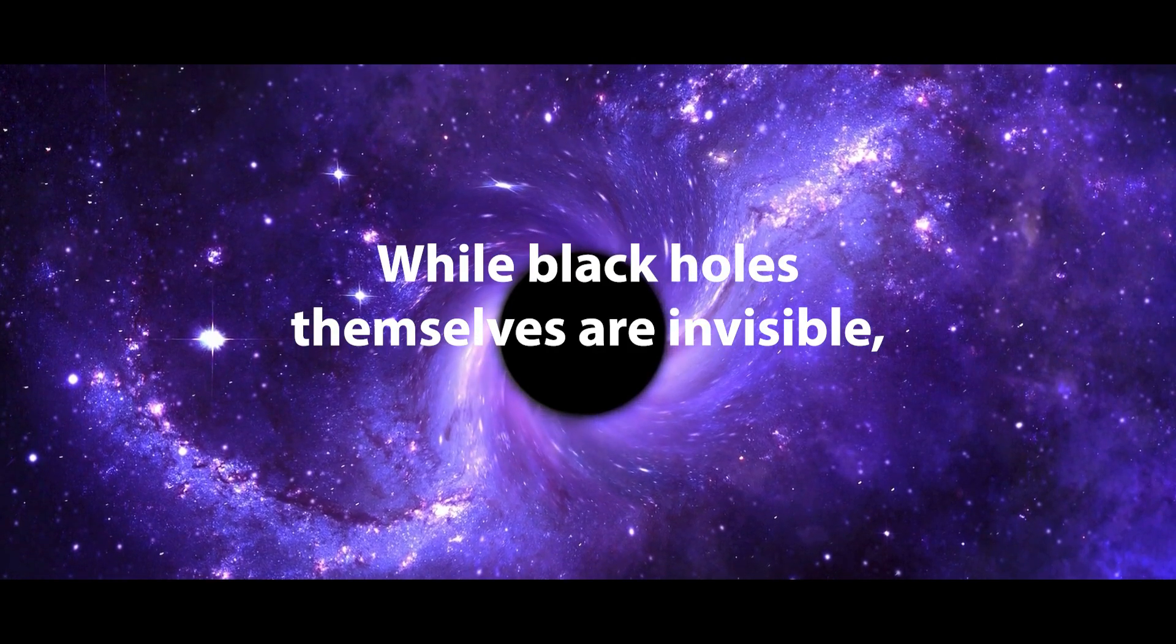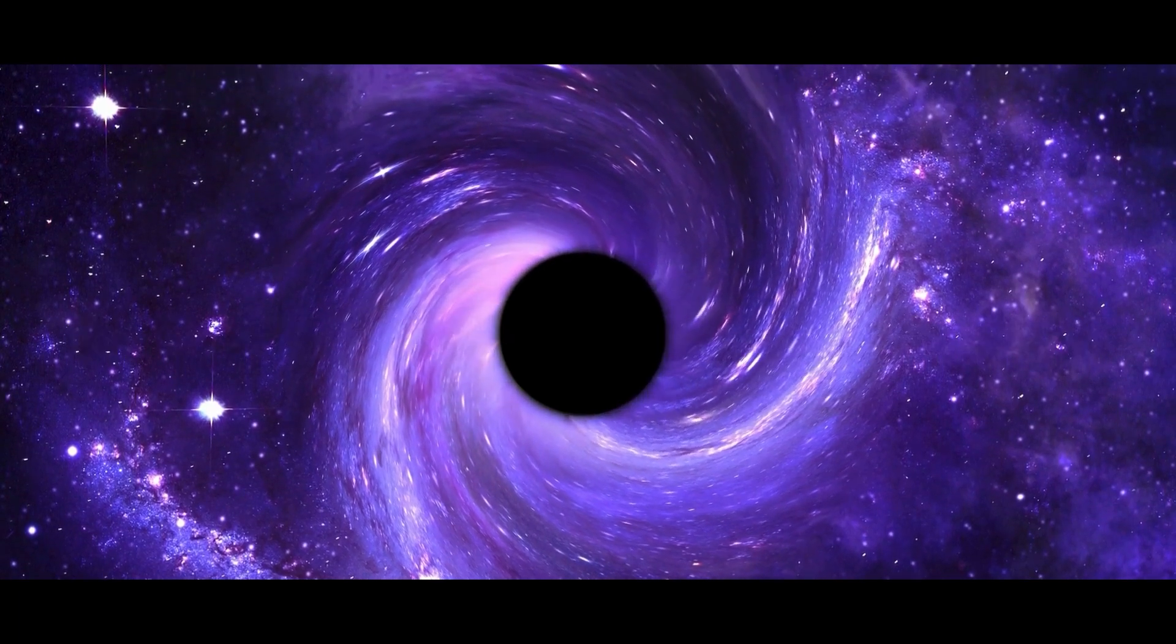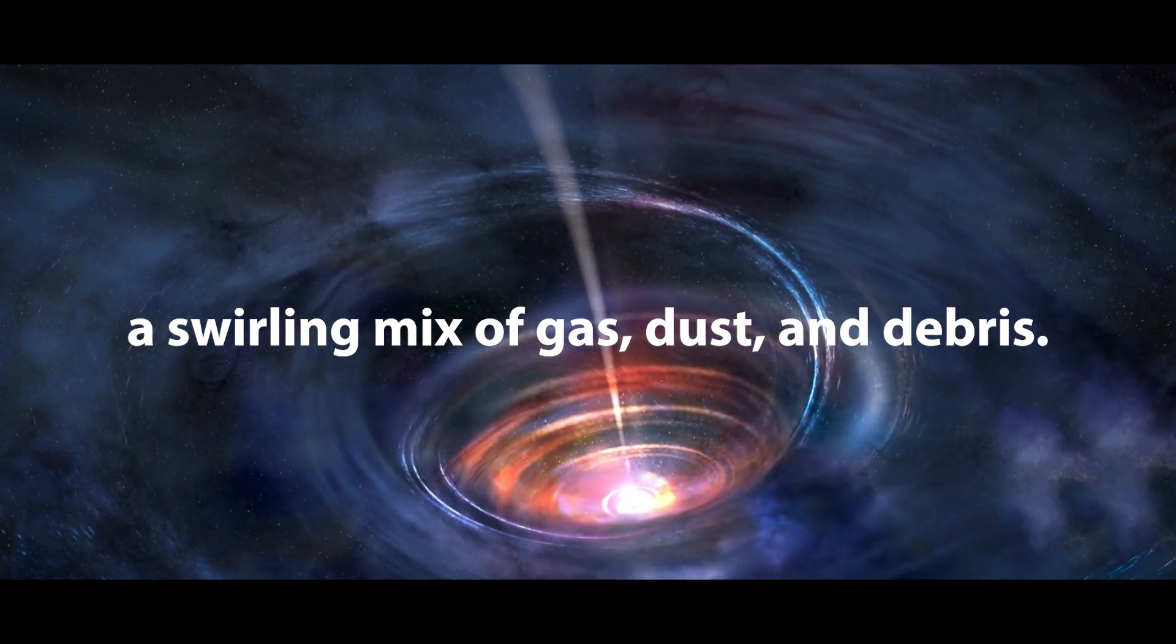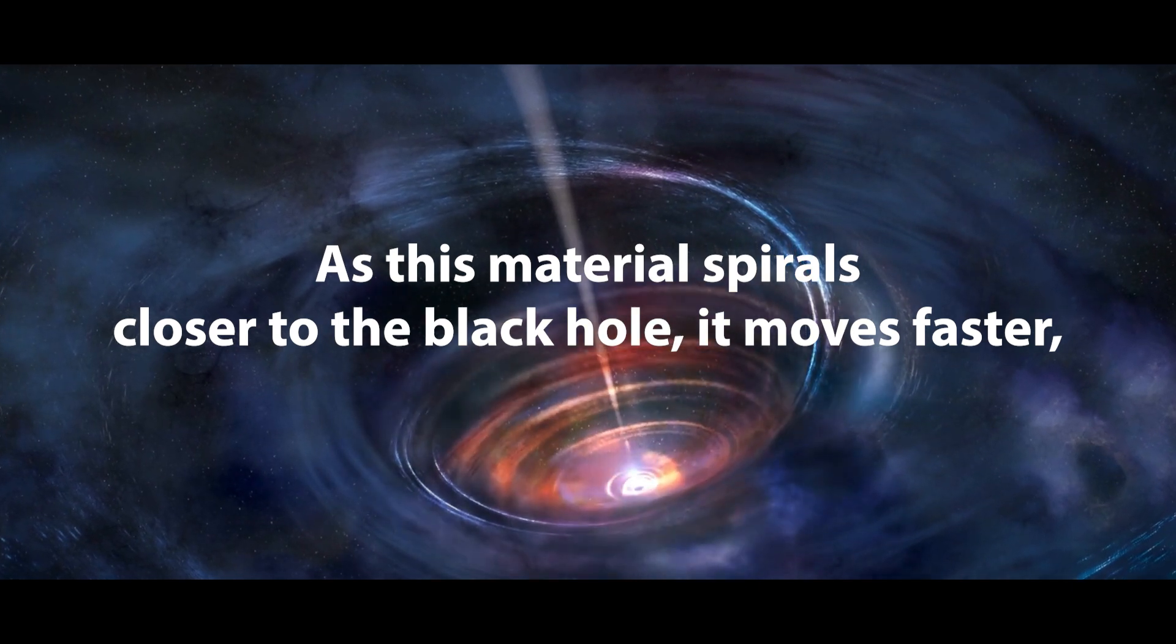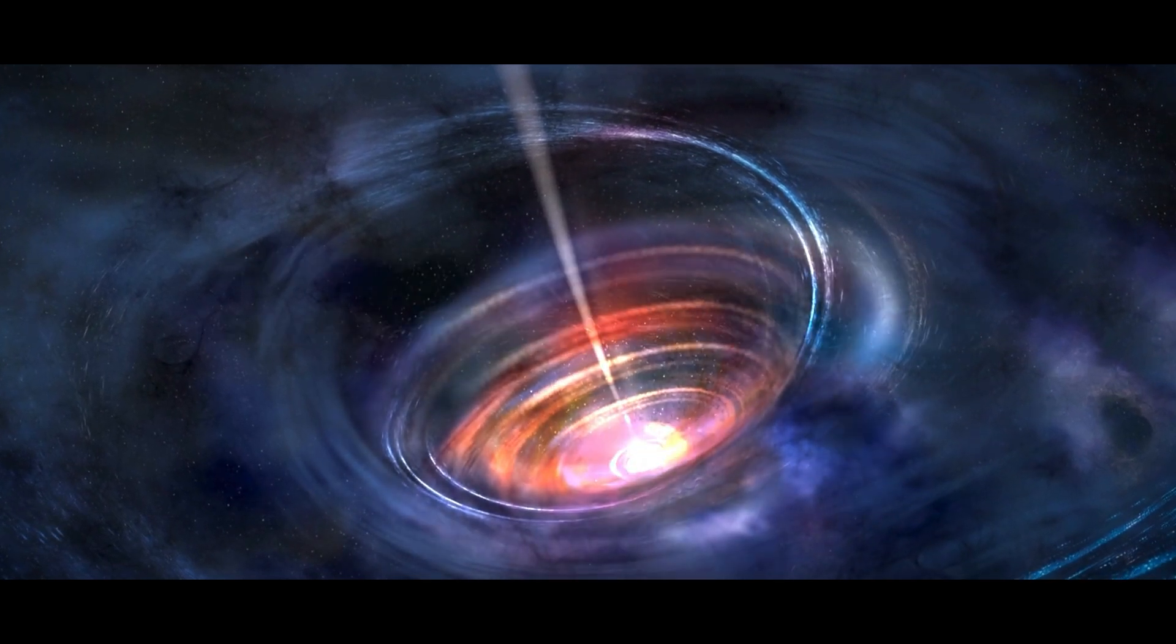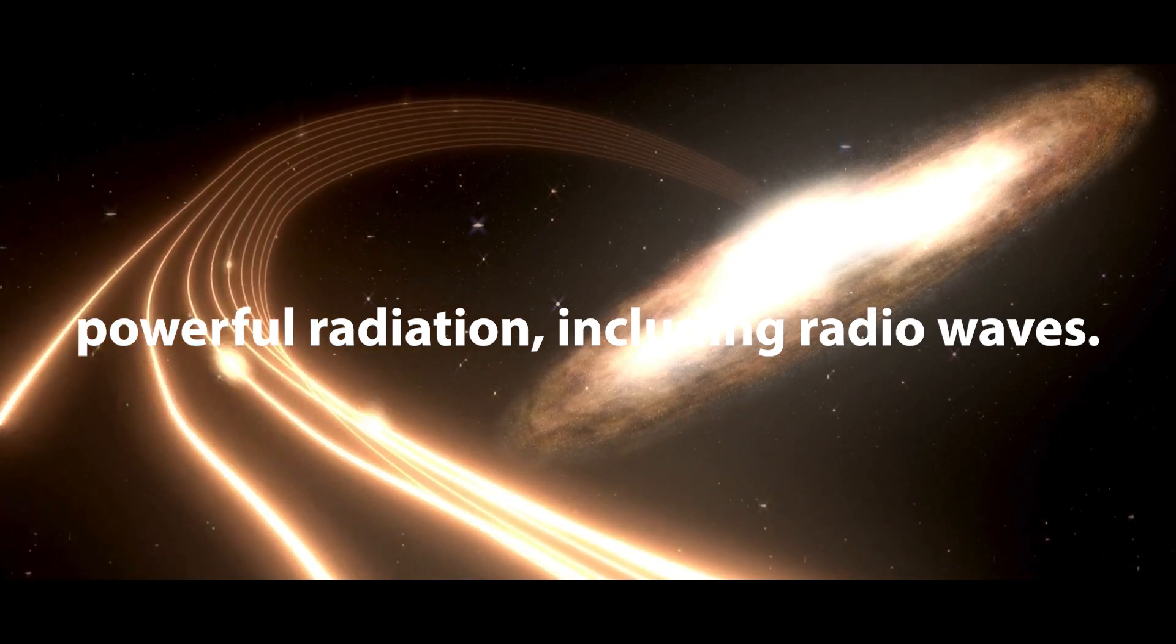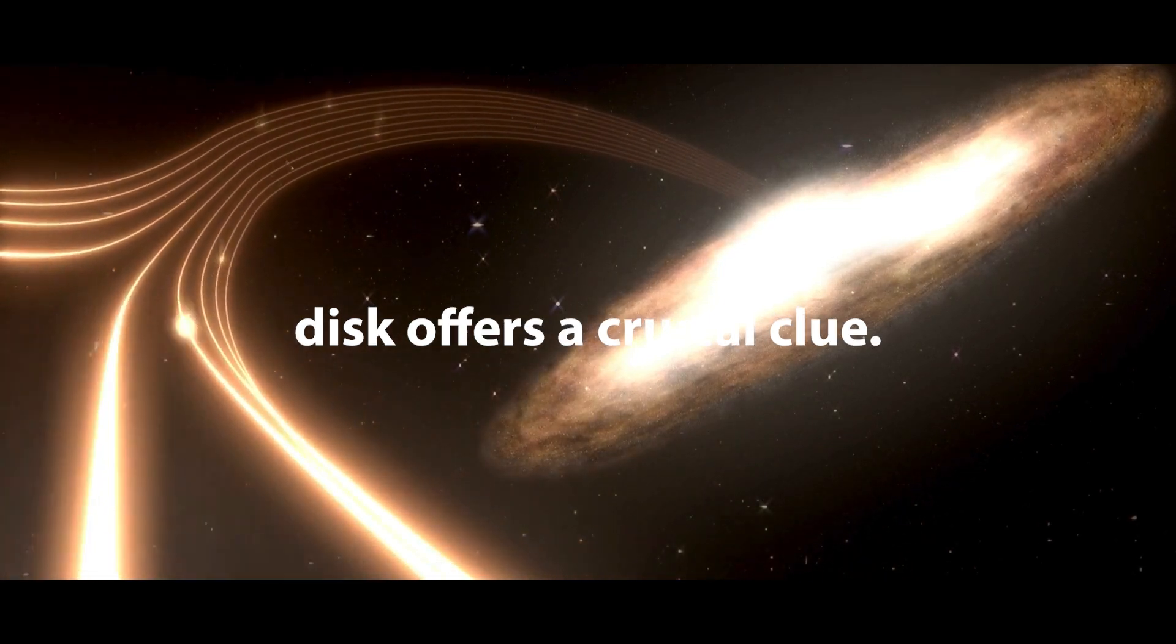While black holes themselves are invisible, the areas around them often glow brightly. Surrounding many black holes is an accretion disk, a swirling mix of gas, dust and debris. As this material spirals closer to the black hole, it moves faster, gets compressed and heats up to extremely high temperatures. This process causes the disk to emit powerful radiation, including radio waves.